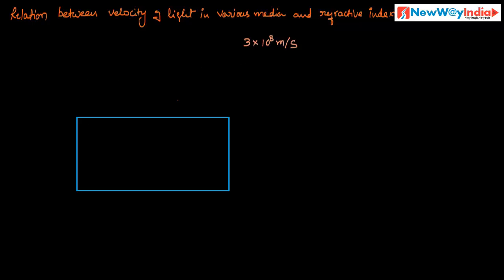This is a light ray incident on a glass lamp. It travels in vacuum, so the velocity of this ray is 3 into 10 power 8 meter per second — the velocity of light in air. This is medium air, and this is medium glass.